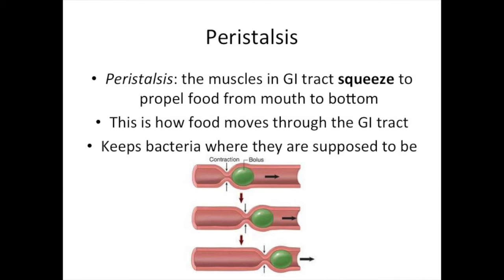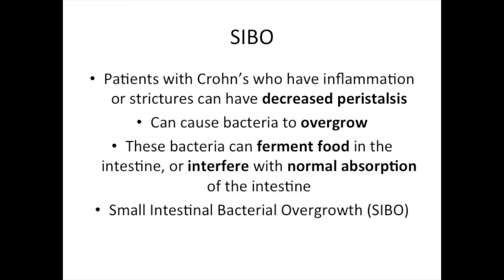Peristalsis also keeps the bacteria in your intestines where they are supposed to be and prevents too many of them from growing in one location. Patients with Crohn's disease who either have inflammation or strictures can have decreased peristalsis, which can cause bacteria to overgrow in the small intestine.